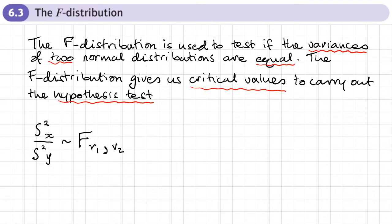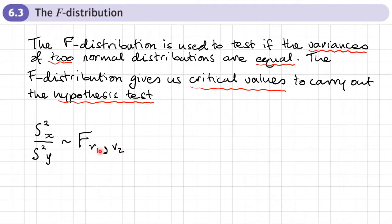The reason we can use this F distribution is that the ratio of the sample variances of two normal distributions follows this F distribution. So if I've got two populations, I find a sample of one and work out its variance as population X, then find a sample of population Y and work out its variance — if I divide one by the other I get a value that follows this F distribution. You'll notice there are two things here: ν₁ and ν₂ — these are degrees of freedom.